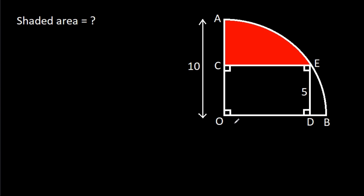In this video, we have been given a quarter circle in which OA is 10 and DE is 5, and we have to find the shaded area.